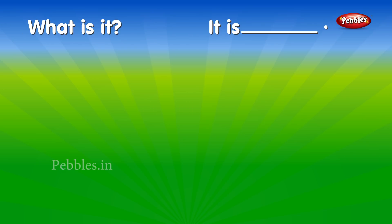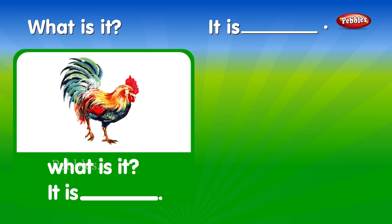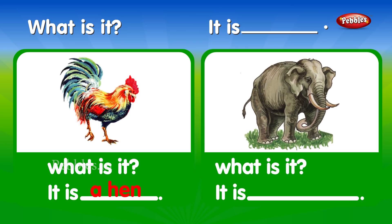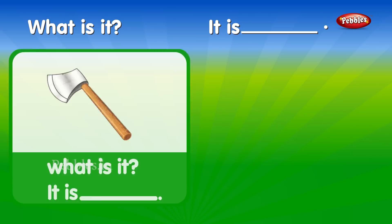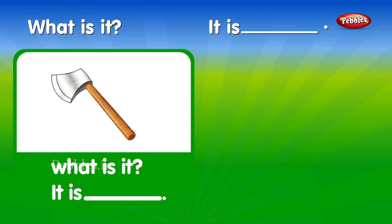What is it? It is ___. What is it? It is ___. A hen. What is it? It is ___. An elephant. What is it? It is ___. An axe.